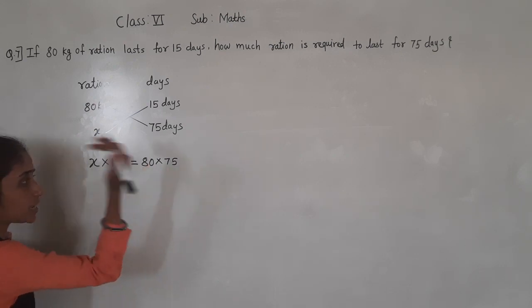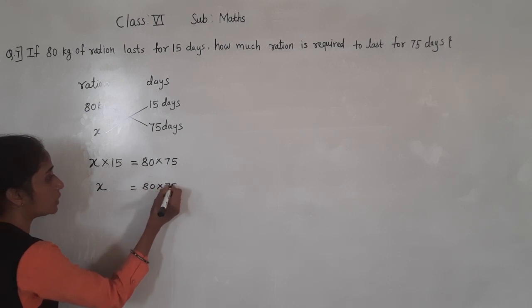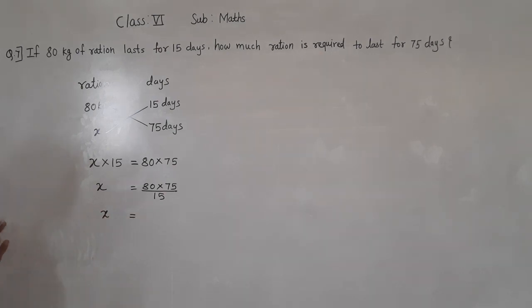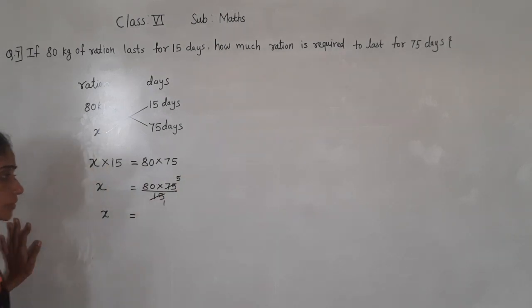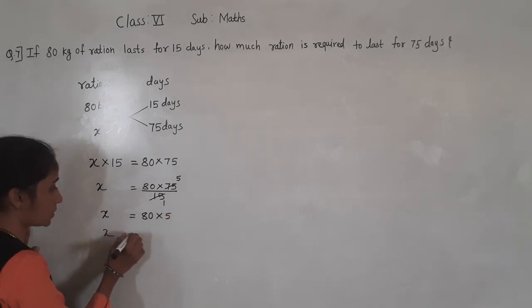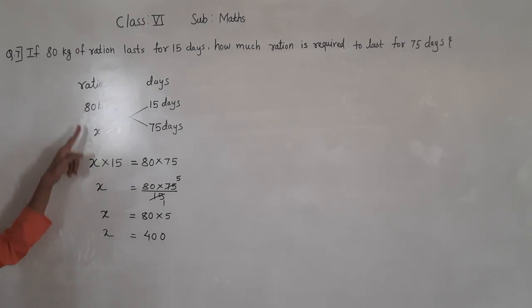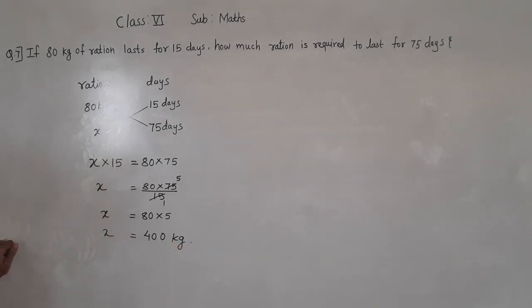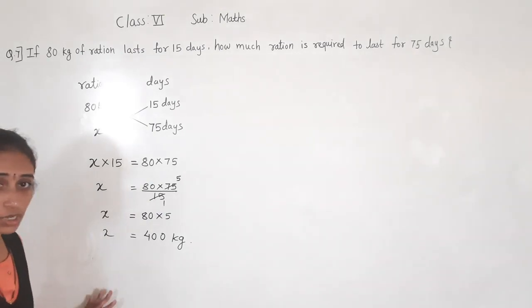Here 15 is multiplied; if we transfer it to the other side it becomes divided. So x is equal to 80 multiplied by 75 divided by 15. So x is equal to 80 multiplied by 5, which gives 400. So the ration required to last for 75 days is 400 kg.